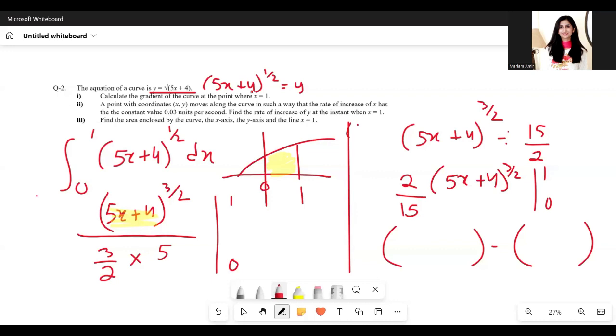So 5 times 1 plus 4, all to the power 3/2. That is 18/5 or 3.6. Now I'm going to replace that 1 with 0.